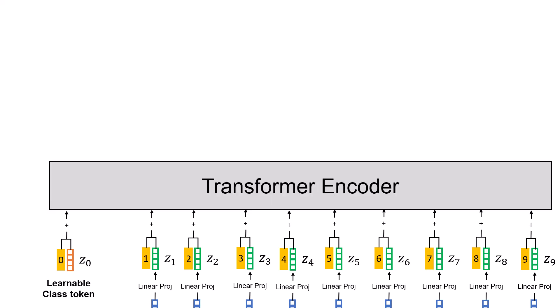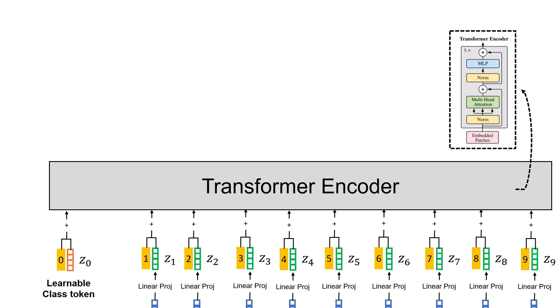And then we have our transformer encoder, which is something that we usually have, which is just a layer normalization, followed by multi-head attention, and skip connection, layer normalization again, MLP, and then skip connection. And we repeat the same procedure L times until we reach the final output.